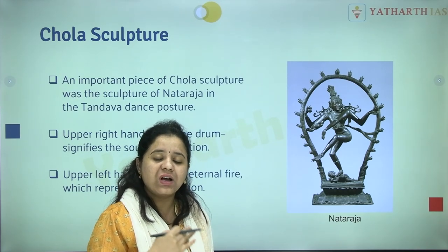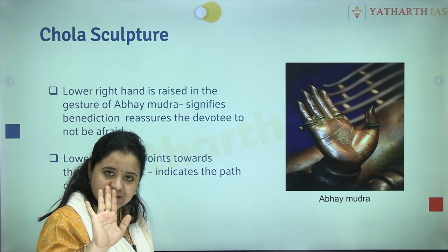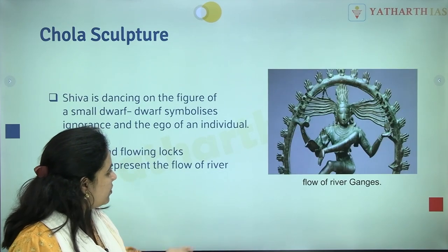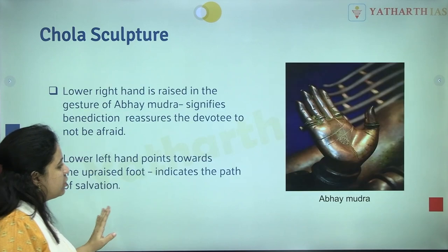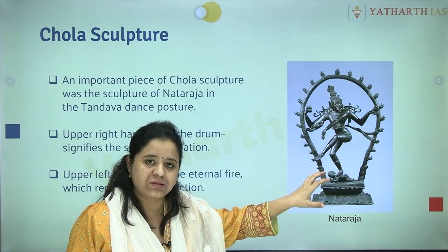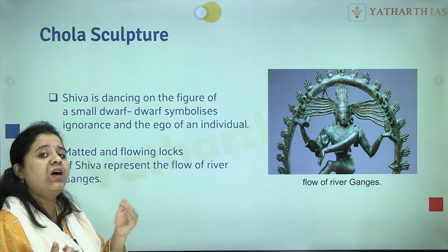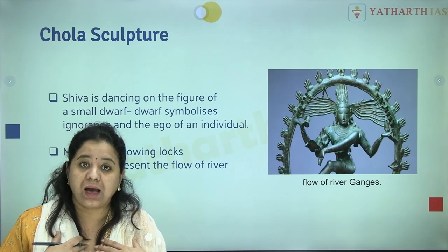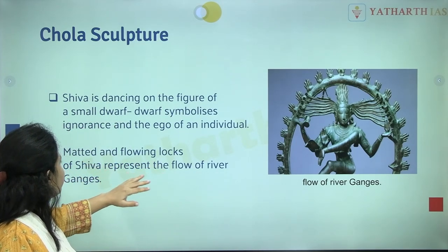This is the significance of the Chola Nataraja sculpture. Shiva is the creator, sustainer, destroyer, and giver of salvation — assuring his devotees at all times. Shiva dances on a small dwarf called Mura, an asura symbolizing ignorance, disbelief, absent-mindedness, and ego. One must overcome ego and ignorance to surrender to Shiva and receive salvation. The matted and flowing locks of Shiva represent the flow of the river Ganges — connecting to the Bhagiratha story at Mahabalipuram.